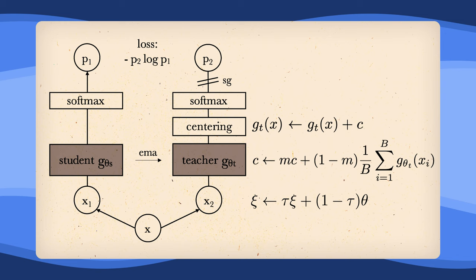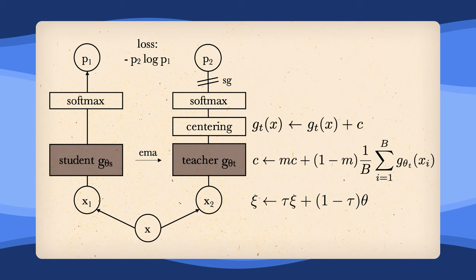Centering prevents one dimension to dominate, as kind of a pseudo label, but also encourages collapse to the uniform distribution. That is why it also somewhat relies on this sharpened softmax, since it has the opposite effect.